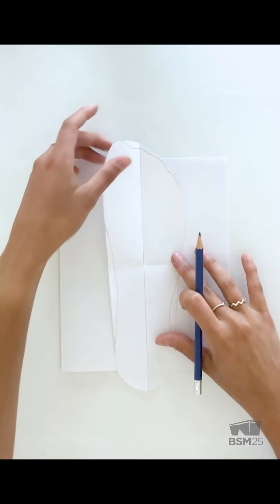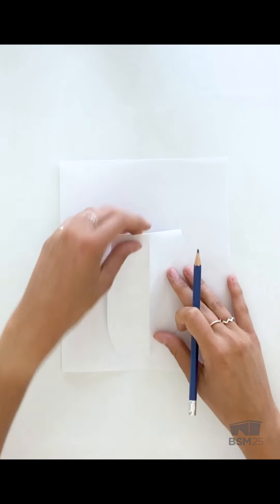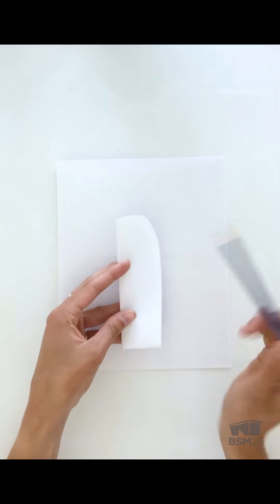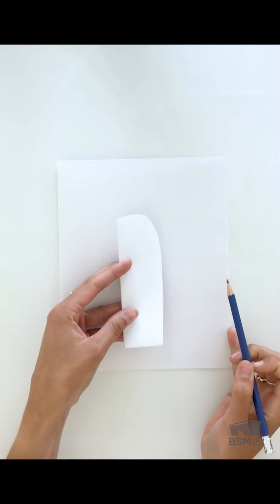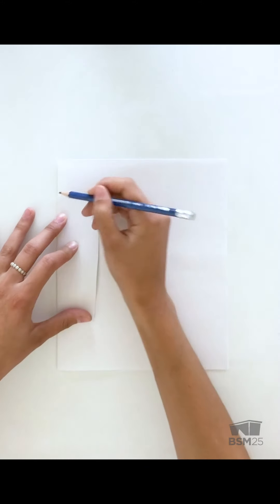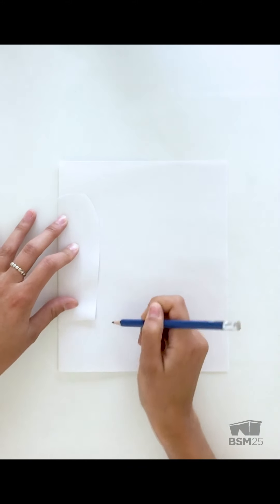We're going to fold our foot tracing in half horizontally, and again vertically, making sure that the side of the big toe is facing upwards. We're going to slide our foot tracing onto the folded edge of the paper. And with a dashed line, trace around the shape.